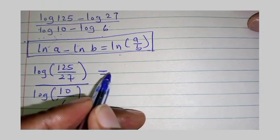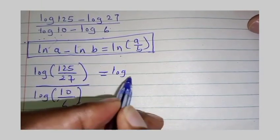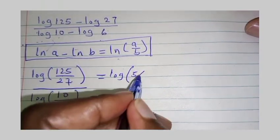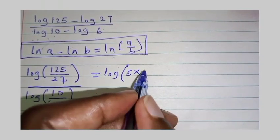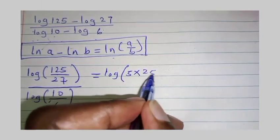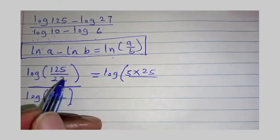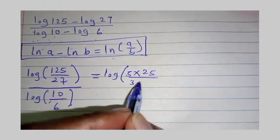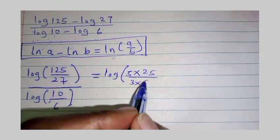So, 125 can be written as 5 times 25 divided by 27 can be written as 3 times 9.